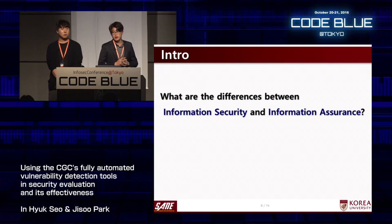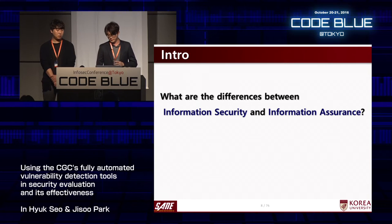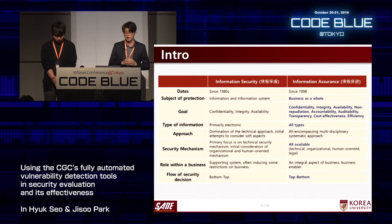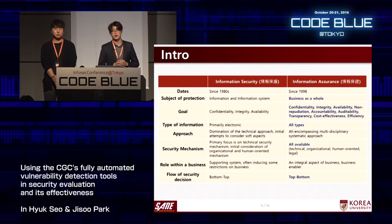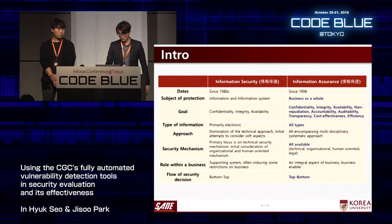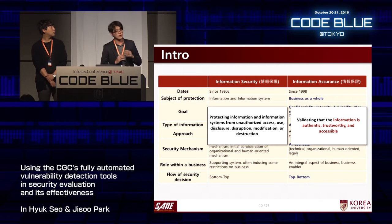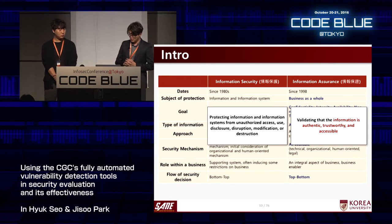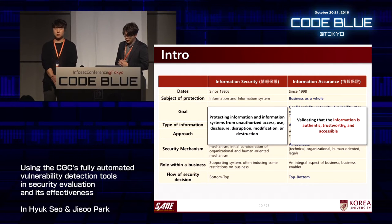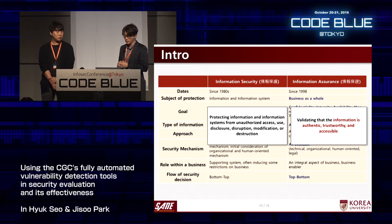What are the differences between information security and information assurance? The goal of information assurance includes not only confidentiality, integrity, and availability, but also non-repudiation, accountability, auditability, transparency, and more. Security mechanisms include all available means — technical, organizational, human-oriented, and legal. To summarize: information security is protecting information and systems from unauthorized access, while information assurance is validating that information is authentic, trustworthy, and accessible.